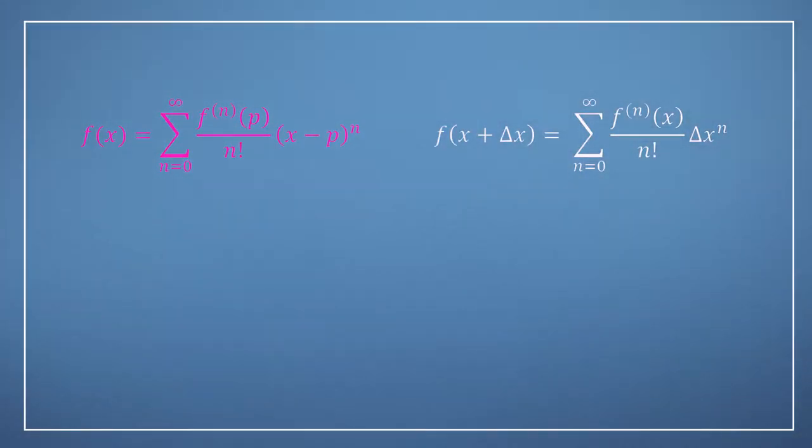Just to recap on the notational options from the previous video, we saw that we can re-express the Taylor series from a form that emphasizes building the approximation of a function at a point p to a totally equivalent form that emphasizes using that function to evaluate other points that are a small distance delta x away.